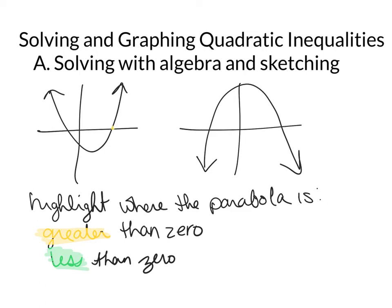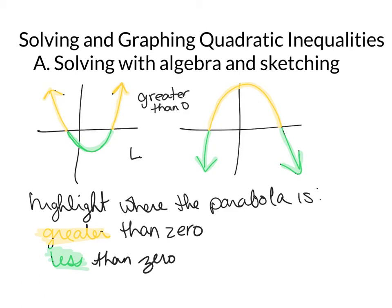I'm going to use yellow for greater than and green for less than. The yellow part is where the parabola is greater than zero. Greater than zero is above the x-axis, and that makes the part below less than zero. On the upside-down graph, less than zero is below the x-axis — those are the two wings — and then the mound in the middle is where it is greater than zero.